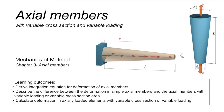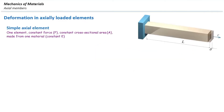In this lecture, we are going to determine how much is the deformation in an axially loaded element. An axially loaded element is subjected to a force along its own axis. A simple axially loaded element means the element that is subjected to a constant force and has a constant cross-section area.